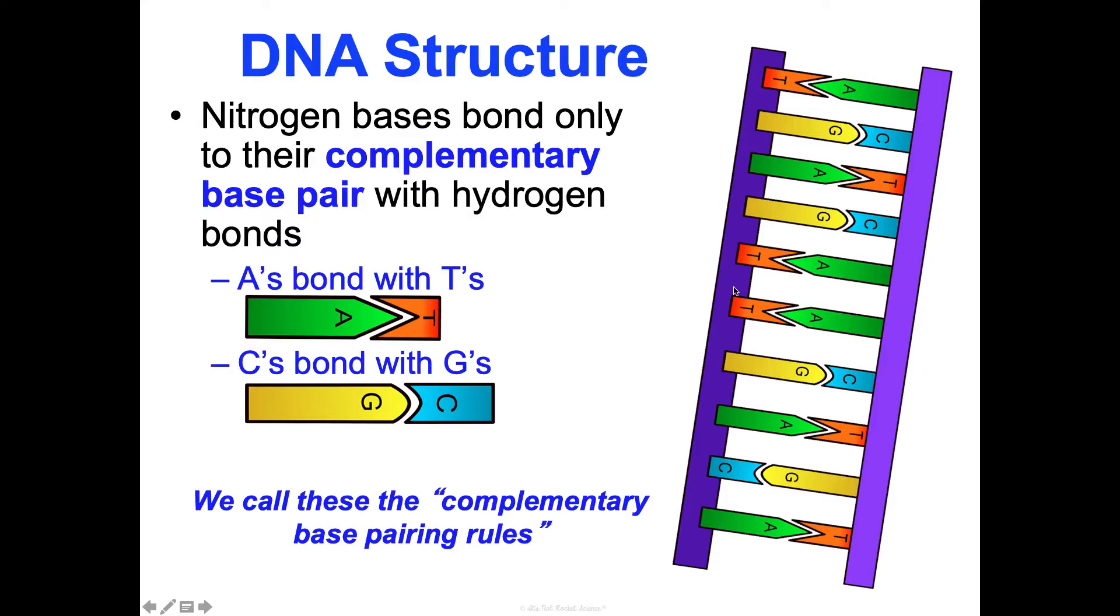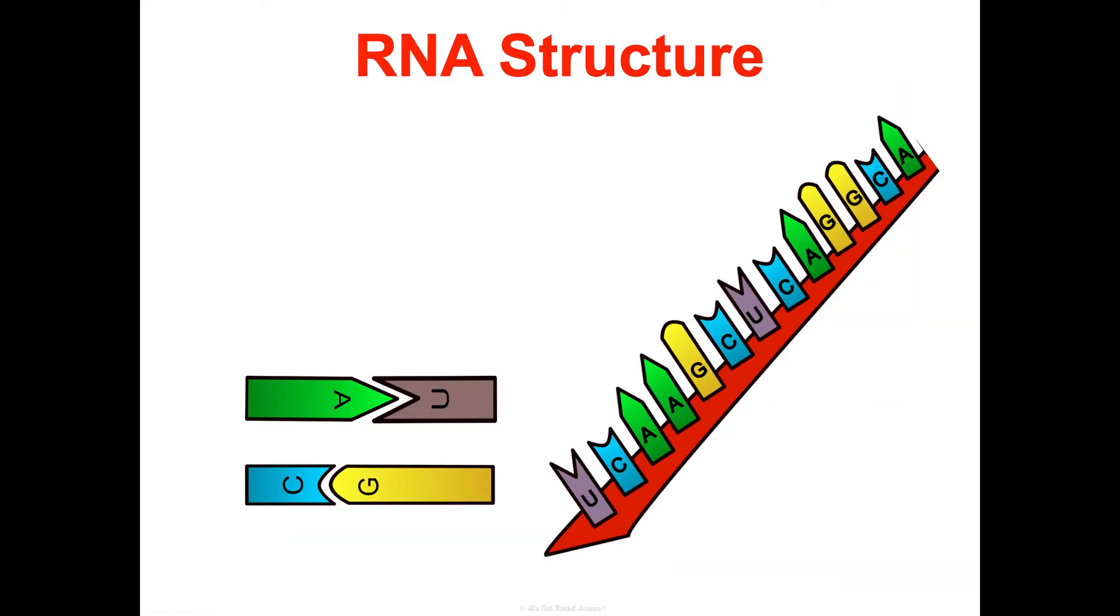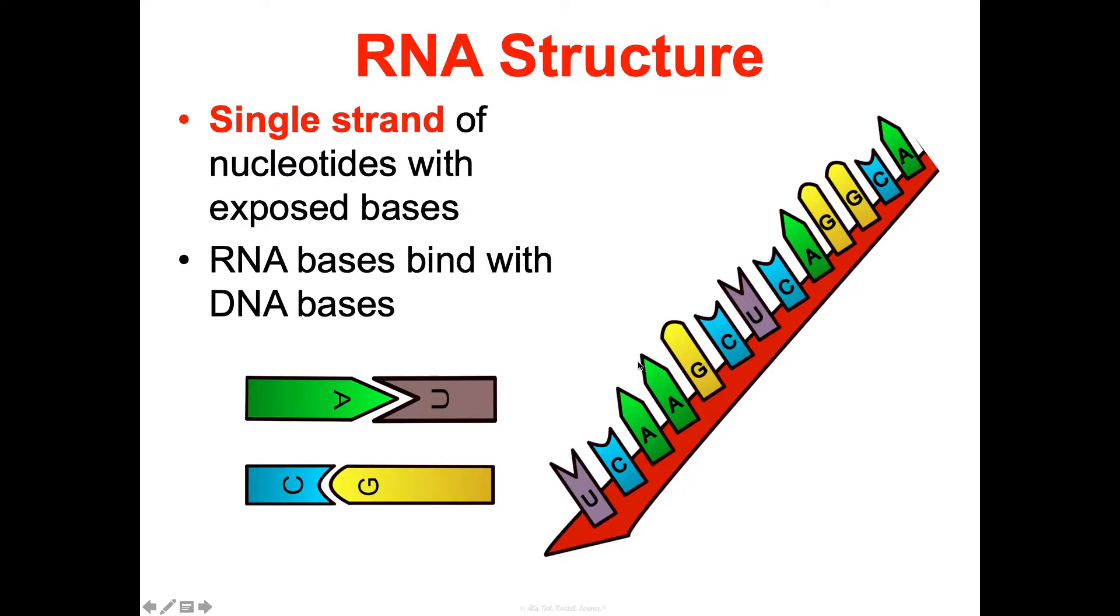RNA structure is a little different. Just look at it - it's a single strand of nucleotides with exposed bases. These RNA bases will bind with DNA bases and we'll see that as we go through some important processes in this unit. In this case, A's are going to bind with U's because DNA has thymine and does not have uracil, while RNA has uracil and doesn't have thymine. C's still bond with G's. If you're using our football example, it still works - it's just Auburn University and Carolina Gamecocks.